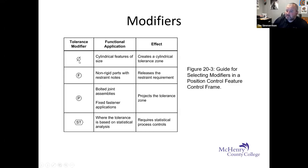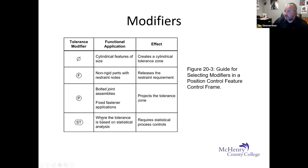Maximum material condition or least material condition can also be used as a modifier. How do we interpret position tolerances? It's either an axis or center plane tolerance zone. Position tolerance applies regardless of feature size as a default. Position tolerance also applies at maximum material condition or least material condition.